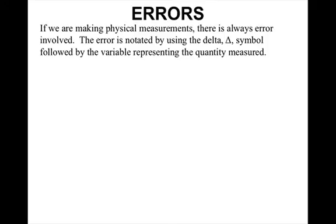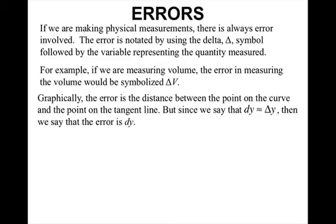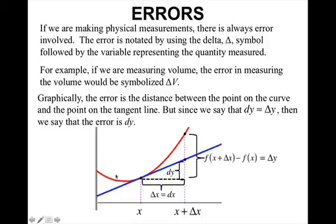Alright, since we're approximating, we're going to have errors. If we are making physical measurements, there is always error involved. The error is notated by using the delta symbol followed by the variable representing the quantity measured. For example, if we are measuring volume, the error in measuring the volume would be symbolized by delta v. Graphically, the error is the distance between the point on the curve and the point on the tangent line. But since we say that dy is approximately the change of y, then we say that the error is dy.